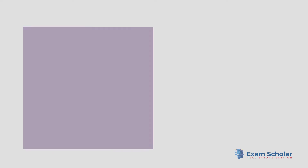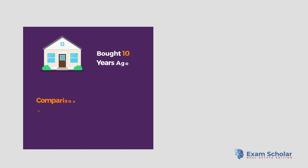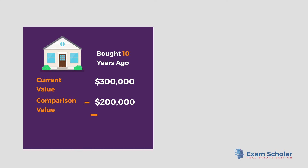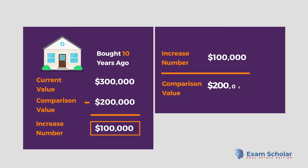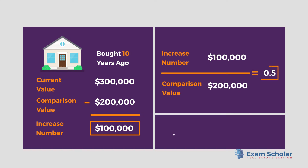Let's apply it to an example. A home was bought 10 years ago for $200,000. It is now worth $300,000. The difference between these two figures can be found by subtracting $200,000 from $300,000 to come to $100,000. Now, we divide our increased number of $100,000 by the purchase price of $200,000, then multiply it by 100 to come to 50%. This property has a percentage change of 50% over the past 10 years.